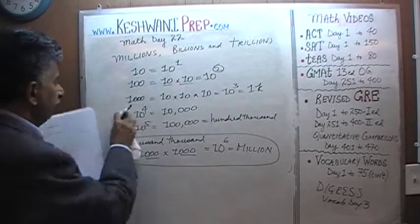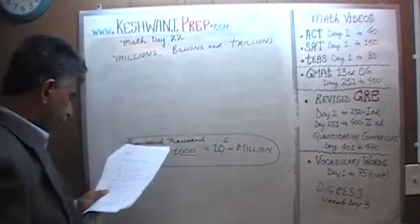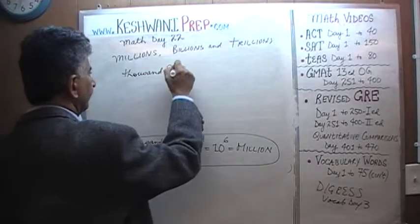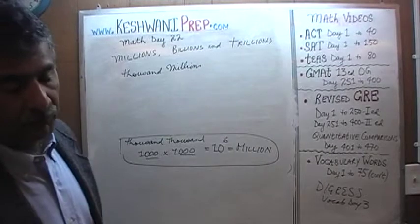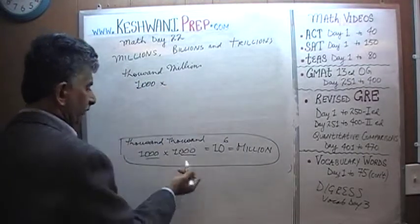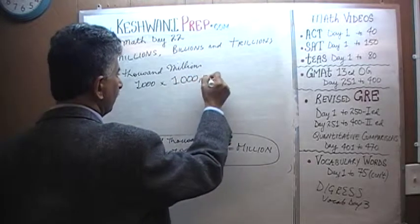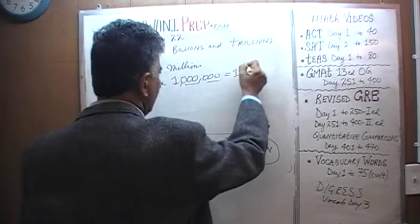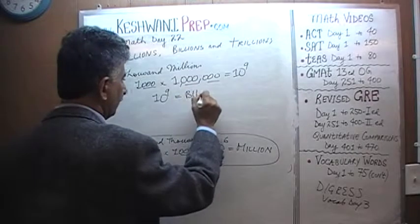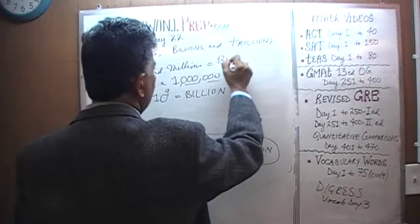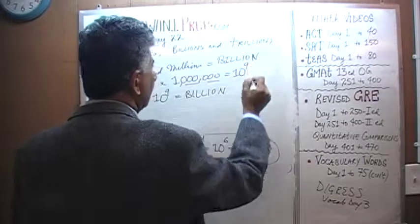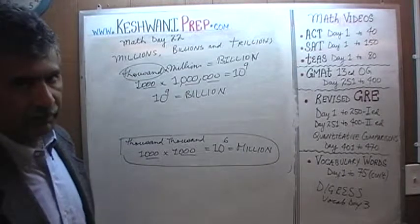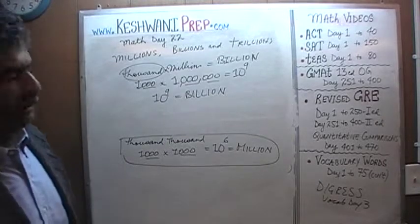Let's move on to billion. If we have a thousand million — one thousand times a million, which is 10 raised to 6 — then one thousand times one million is going to be 10 raised to 9, and 10 raised to 9 is our billion. A thousand million is a billion. A billion has one thousand millions — not a hundred thousand millions, not ten thousand millions — a thousand millions make a billion. That's 10 raised to 9.